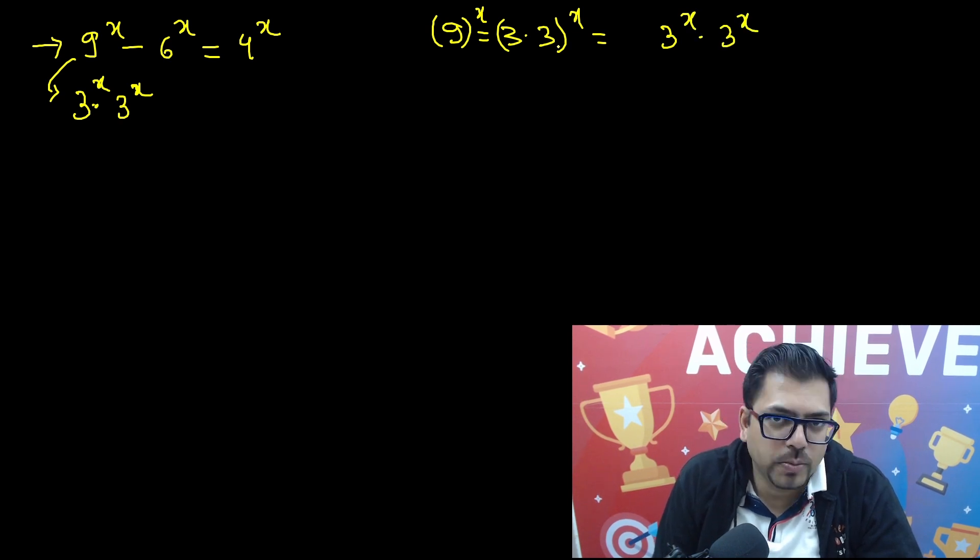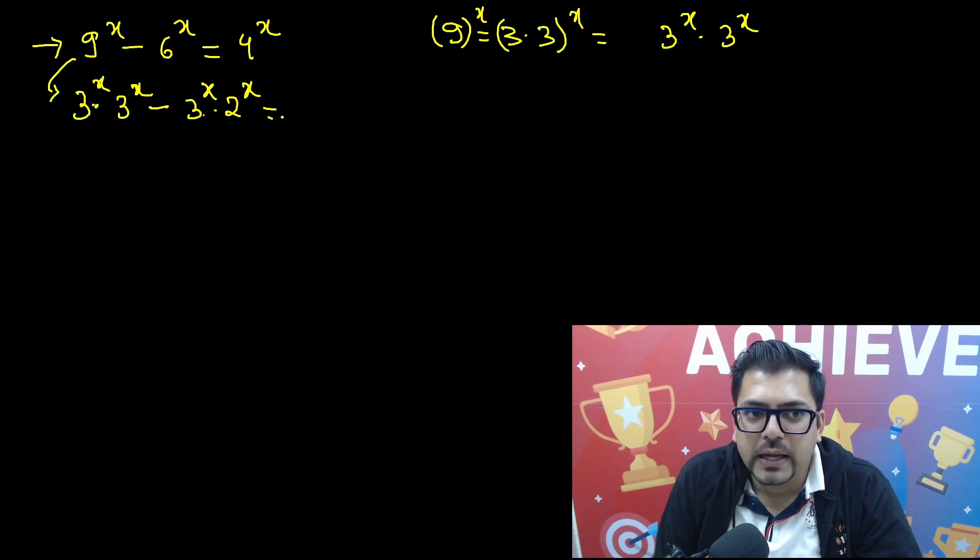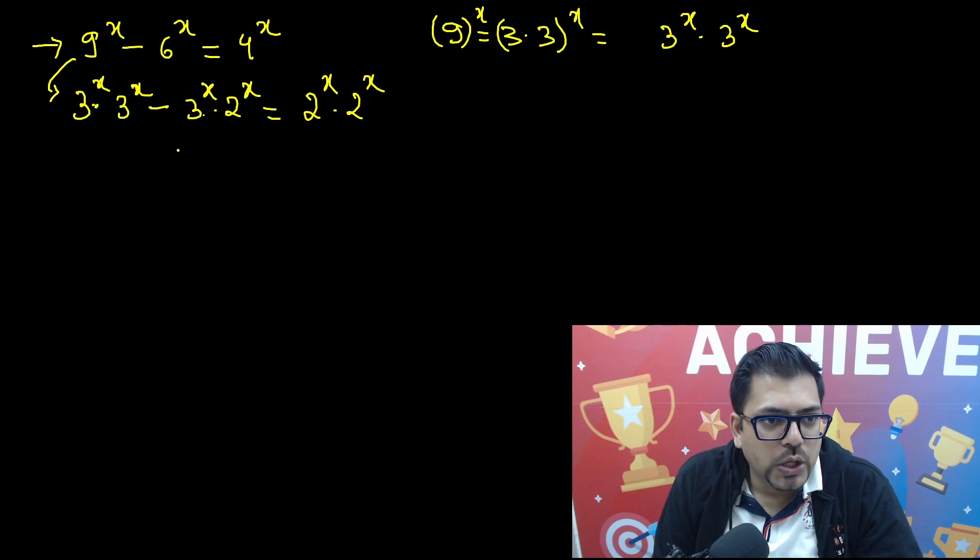Now moving forward, minus 6. 6 can be again written as 3 raised to power x into 2 raised to power x because 3 times 2 is 6. And again, 4 can be written as 2 raised to power x into 2 raised to power x.